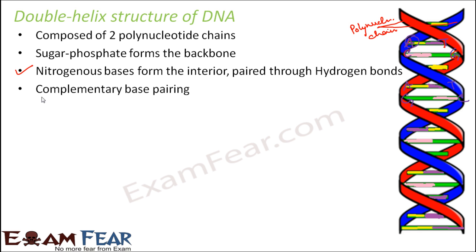Complementary base pairing is one of the most important properties of the structure of DNA, and it plays the most important role in the fact that DNA is central to inheritance. Complementary base pairing means it is not that any base can bond with any other base — adenine will always pair up with thymine, and guanine will always pair up with cytosine.